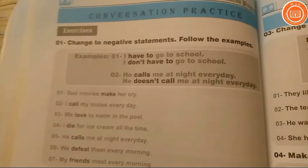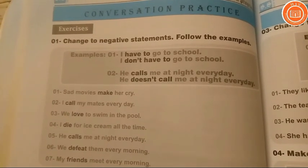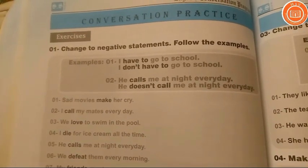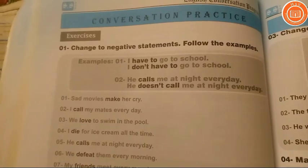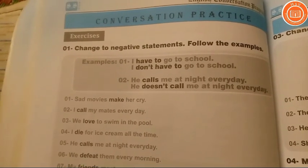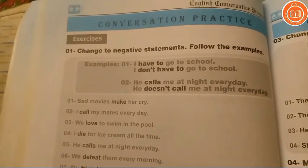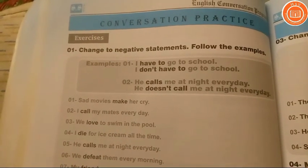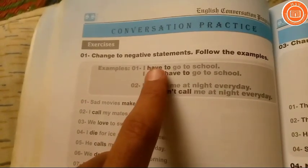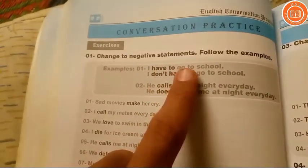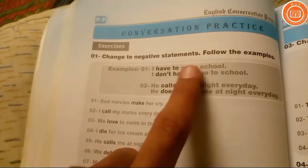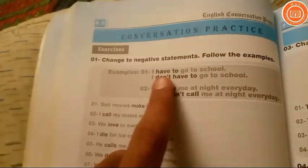Present with the new topic. You can see on this book the exercise number one: change to negative statement. Follow the examples. You can see the examples — number one: 'I have to go to school.' This is the affirmative sentence.